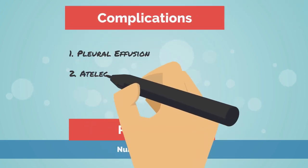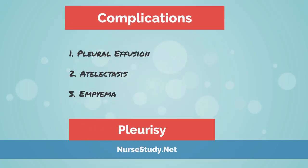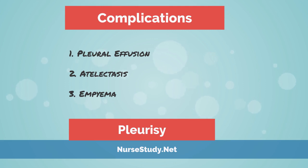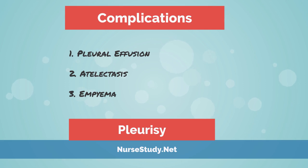Complications. 1. Pleural effusion — in cases when pleurisy is caused by a bacterial infection, such as tuberculosis, or a pulmonary embolism, an excessive buildup of fluid in the pleural cavity is evident. This is called pleural effusion, which is characterized by chest pain, shortness of breath, and cough. Treating the underlying cause of pleurisy usually resolves pleural effusion. If unresolved, surgical interventions such as putting a chest drain may be needed.